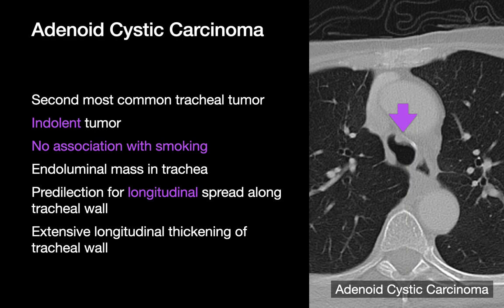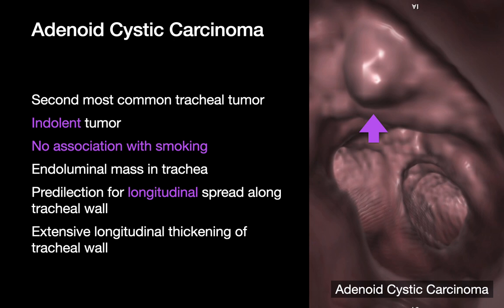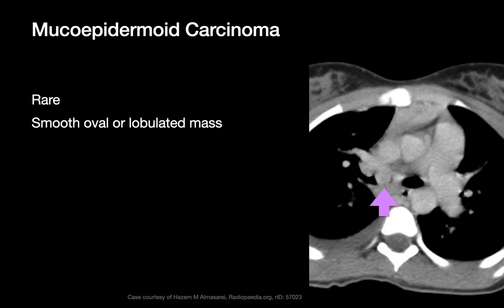Adenoid cystic carcinomas are the second most common malignant tracheal tumor. Unlike squamous cell carcinomas, they are not associated with smoking and tend to grow more indolently. Occasionally, adenoid cystic carcinomas grow longitudinally along the length of the trachea in the craniocaudal direction, though some cases are more focal in morphology. Mucoepidermoid carcinomas are the fourth tracheal tumor to remember — malignant as well, but considerably more uncommon than squamous cell carcinomas and adenoid cystic carcinomas.